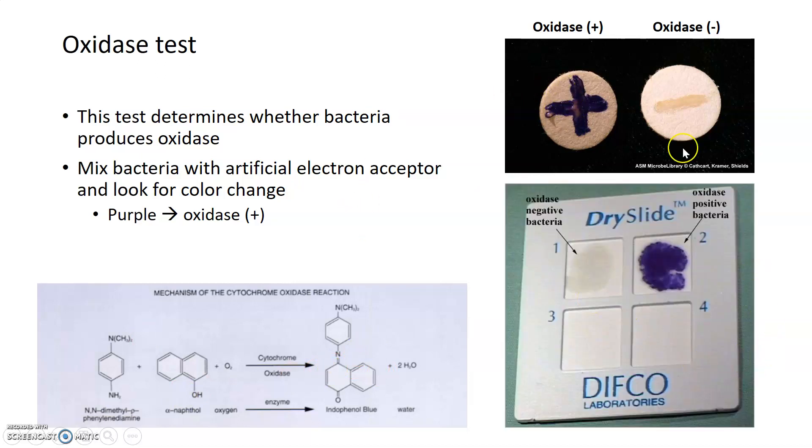Oxidase tests can also be done on what's known as a dry slide. This is what you're going to use in your virtual oxidase test module. The dry slide is basically pieces of filter paper cut into squares and then arranged into quadrants. They're also impregnated with this same artificial electron acceptor so that when you swipe or swab your bacterial samples onto the dry slide, you'll see either no color change for an oxidase negative bacteria or purple color change for an oxidase positive.